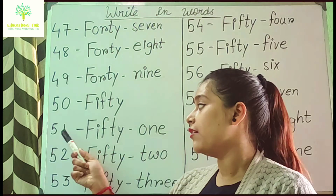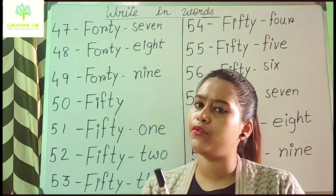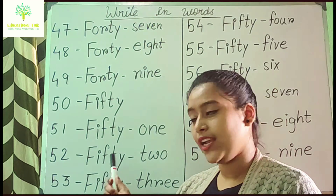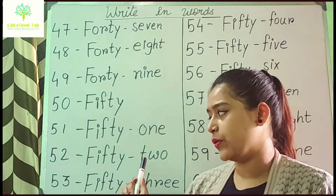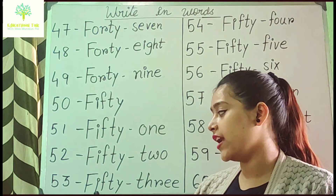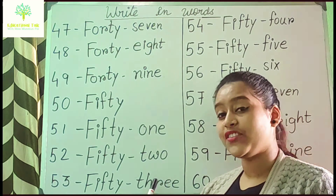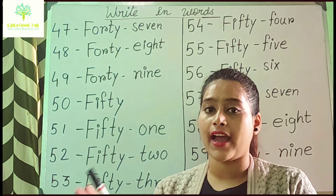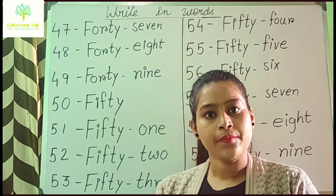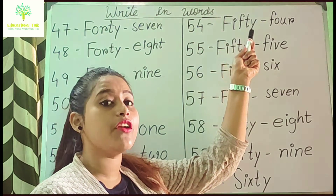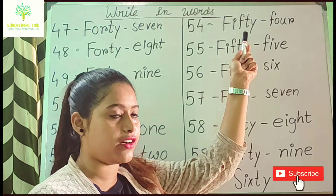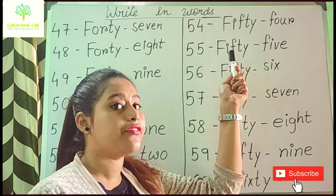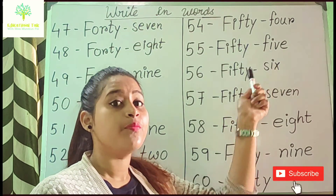For 51, F-I-F-T-Y then 1 is O-N-E. First write the 50 spelling then write the 1 spelling. For 52, F-I-F-T-Y then 2 is T-W-O. For 53, F-I-F-T-Y then 3 is T-H-R-E-E. Remember the first letter will be capital, after that the letters will be small. For 54, first write 50 spelling F-I-F-T-Y then 4 is F-O-U-R.